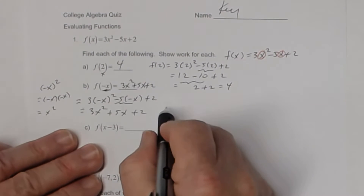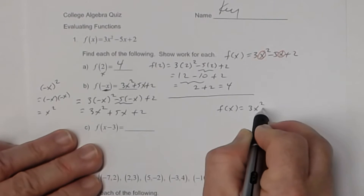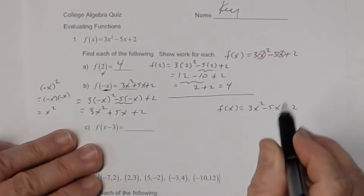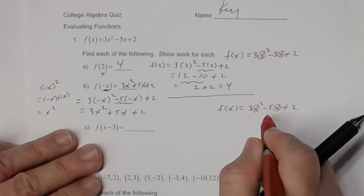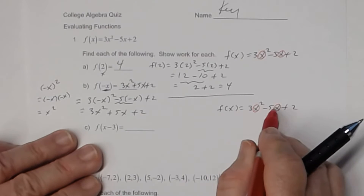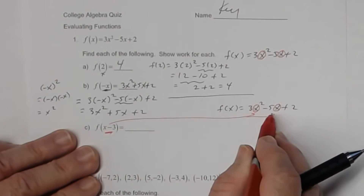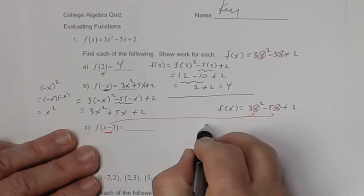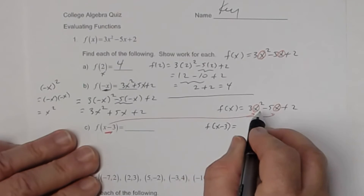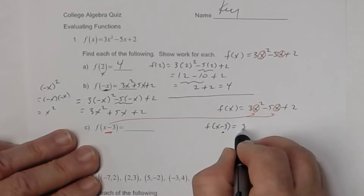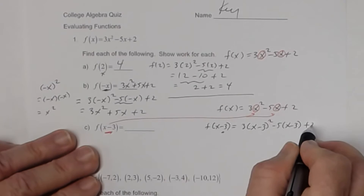In part C, I'll rewrite the function again: f of x equals 3x squared minus 5x plus 2. I'm going to circle the variable x's. Wherever I see those variables, I'm going to substitute x minus 3. So f of x minus 3 is going to equal 3 times x minus 3 squared, minus 5 times x minus 3, and then plus 2.